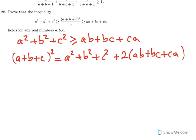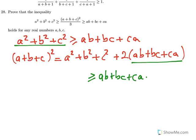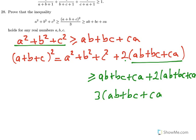Now, if we use the inequality a squared plus b squared plus c squared is greater than or equal to ab plus bc plus ca, I know that this expression is now greater than or equal to ab plus bc plus ca plus two times ab plus bc plus ca. So I have three of them now: three times ab plus bc plus ca.